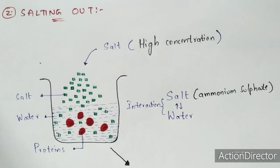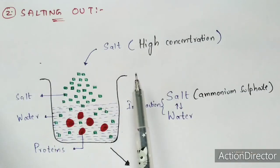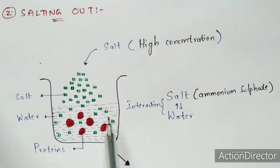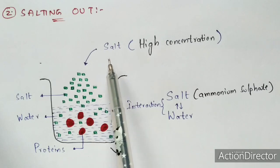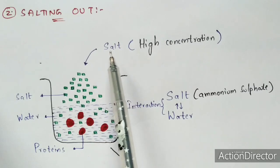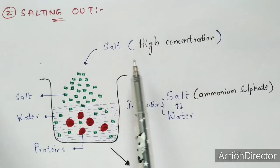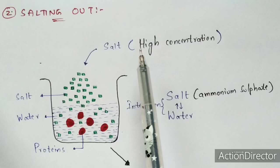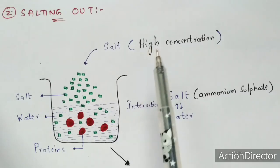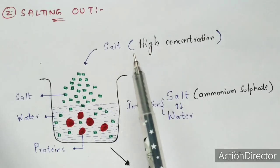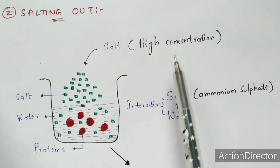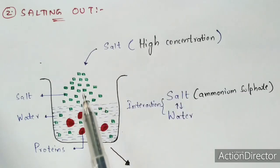Now let us see the salting out process. Again, take a beaker, pour water into it, and add proteins. Here, the salt which is going to be added should be in high concentration — whereas in salting in, the salt is added in low concentration. This is the major difference between salting in and salting out.